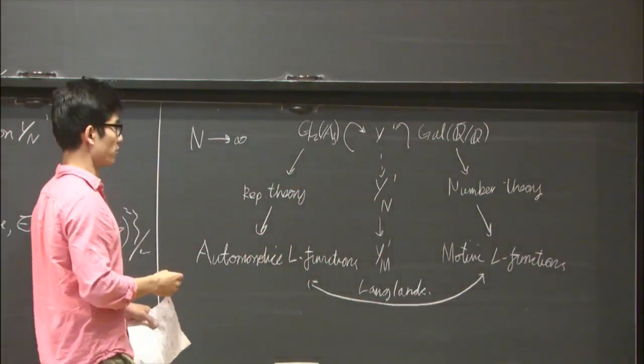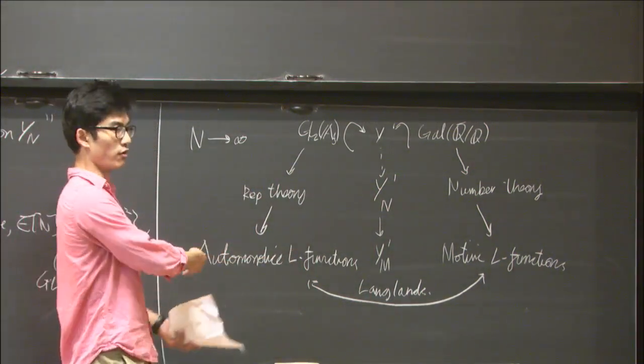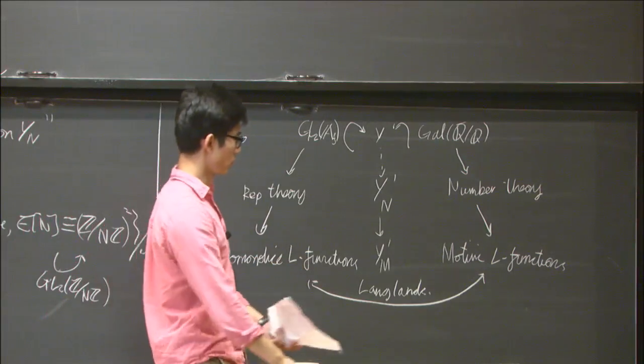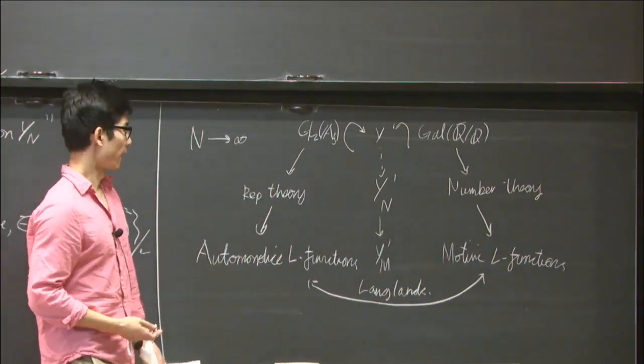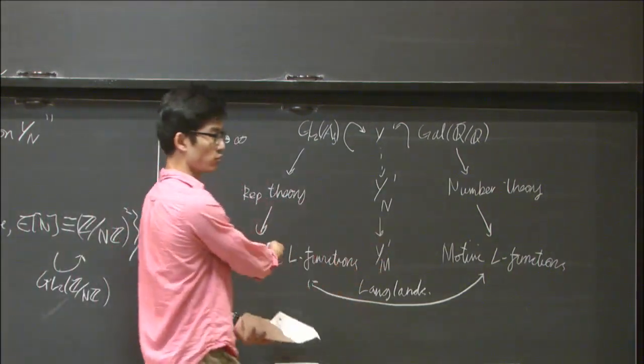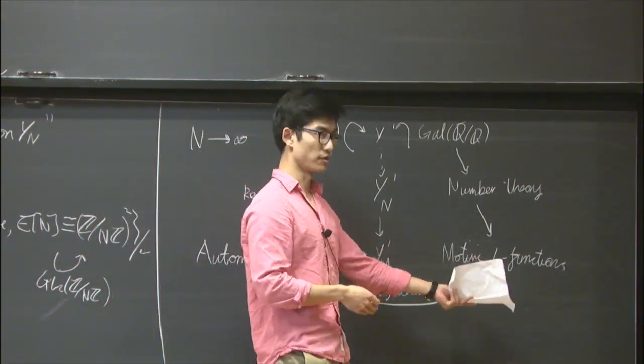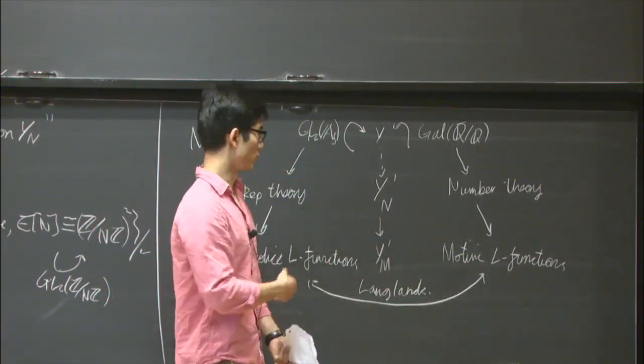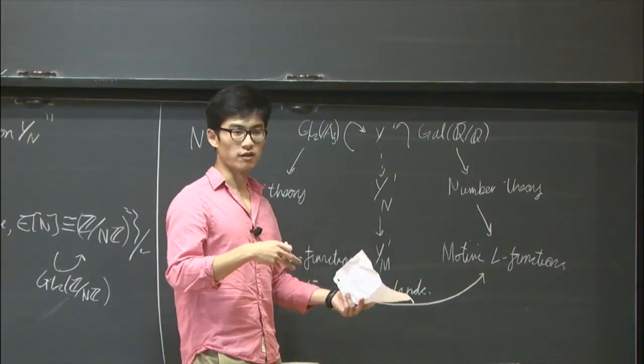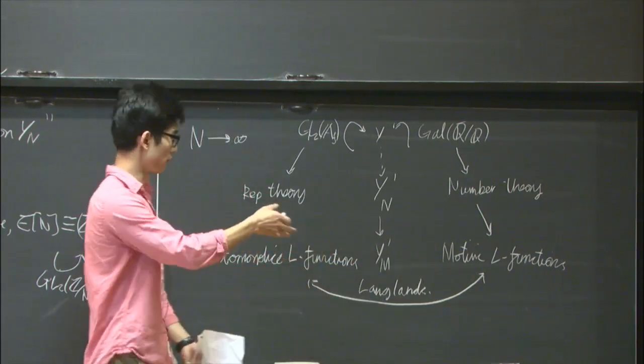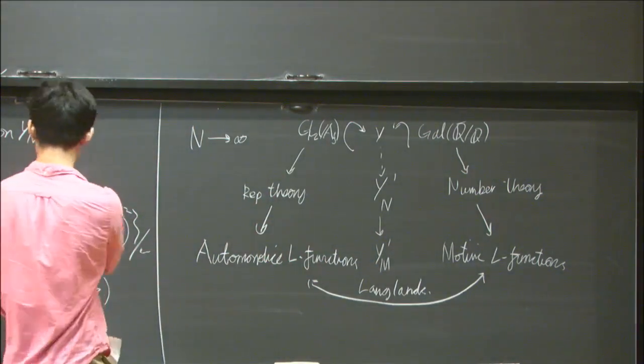The upshot of this is that, since these two L functions are defined in different ways, you have different techniques which are available on one side and not the other. For example, it's conjectured that all motivic L functions have an analytic continuation to the whole complex plane. The only way we know how to do that at the moment is to try and relate to some automorphic L functions. Conversely, with certain motivic L functions, you have things like the Weil conjectures, which you can use to constrain the location of the zeros of these L functions, and hence bound the coefficients of these L functions.